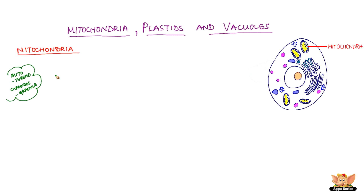In Greek, mito means thread and chrondos means granule. Mitochondria means thread of granules.